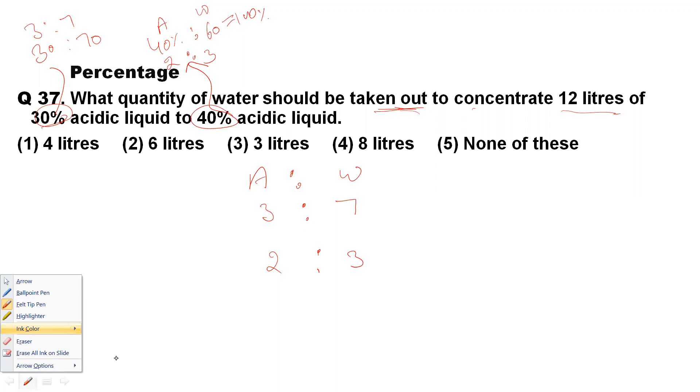But in this question we have to do something else also. We have to make the constant value the same—that is acid. The acid value is 3 in the beginning, and in the end it is 2. That means we have to make the 3 and 2 values the same. We can multiply or divide these two values with any number.